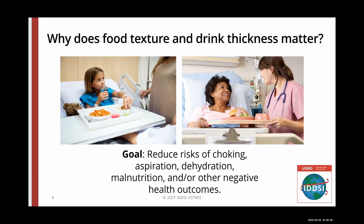We must first ask ourselves: why does food texture and thickness of a drink or liquid matter? Certain properties of food, such as dry and crumbly or sticky and hard textures, can be associated with risk of aspiration, choking, or even food impaction in the esophagus. Both children and adults with chewing and/or swallowing difficulties are at greater risk of food or liquid entering the airway, called aspiration, and/or difficulty clearing food through the mouth, throat, and esophagus.